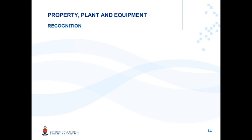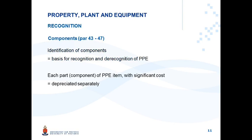To summarize: components play an important role in recognition. The identification of components is the basis for the recognition and de-recognition of property, plant and equipment. Each part of property, plant and equipment with a significant cost in relation to the total cost of the item will be depreciated separately. After concluding that an item may be recognized as property, plant and equipment, the components of that item form the basis for this recognition.